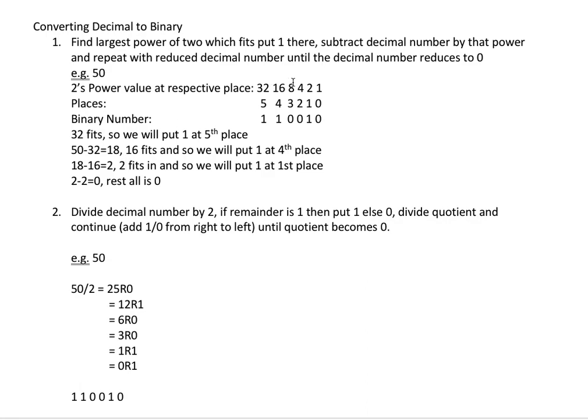And then we put 1 at the 2nd place and then we continue again. What we are looking at is 2 minus 2 equals 0, and that means everything is 0 now.